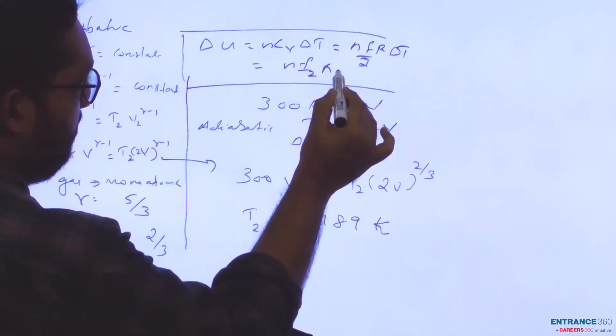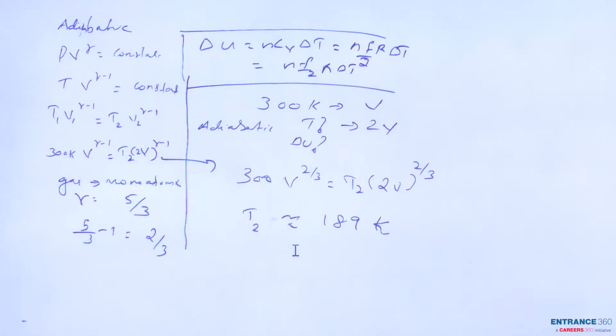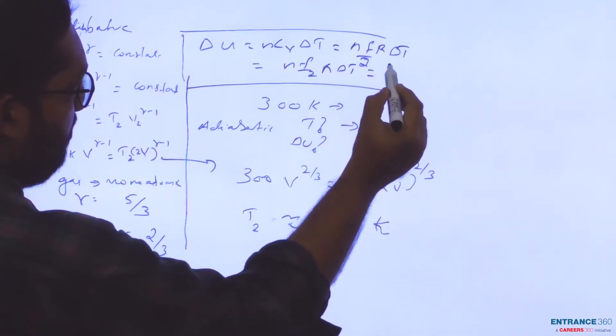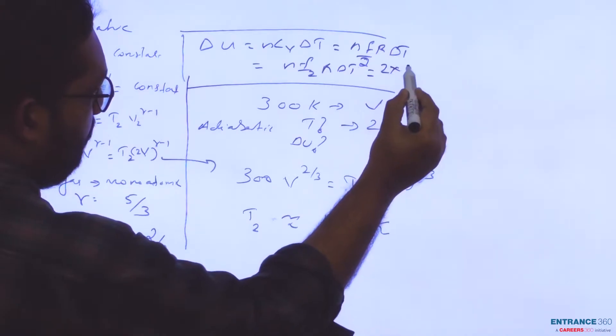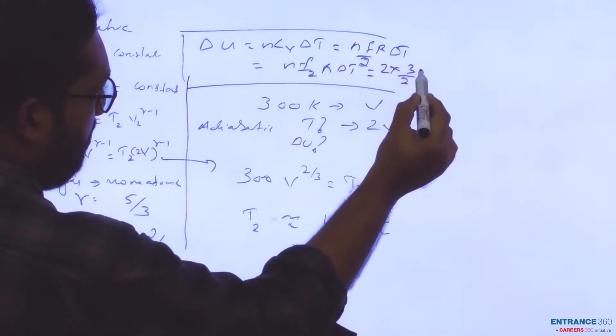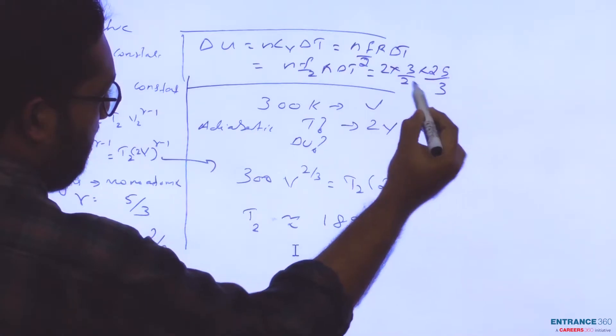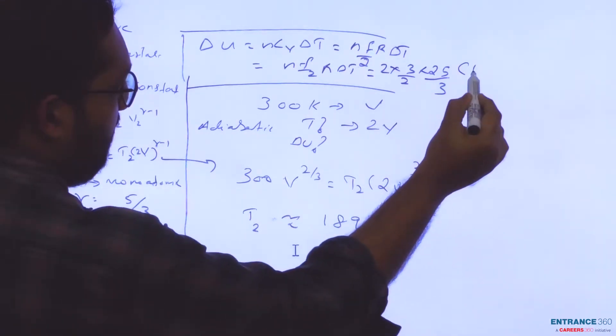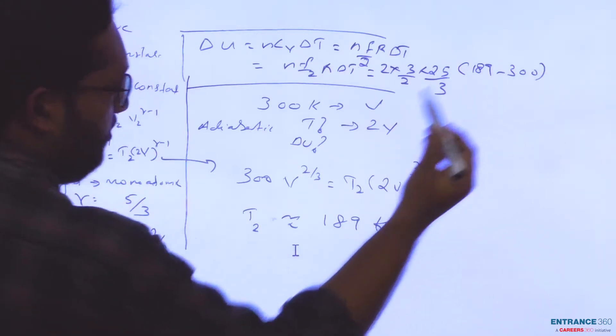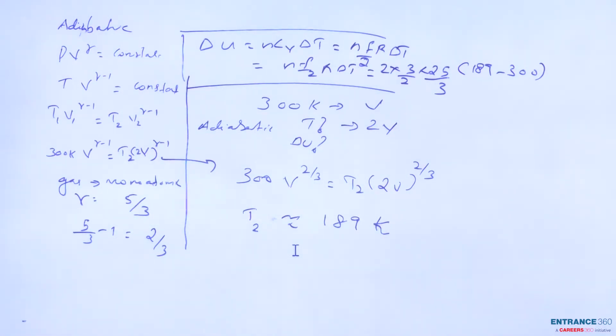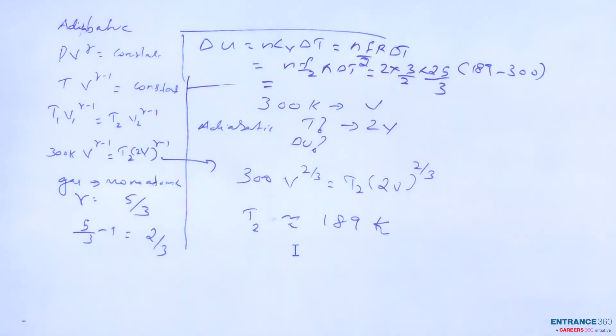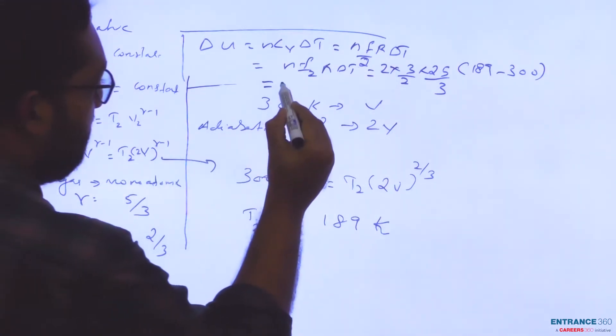We know the value of ΔT is 189 minus 300, and n equals 2. So 2×3/2×R×(189-300) equals -2.7 kJ.